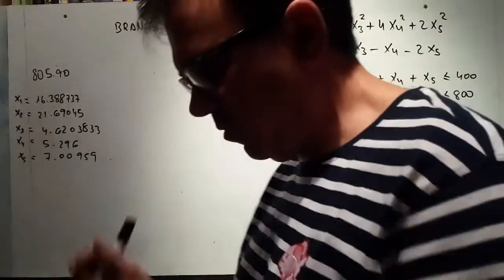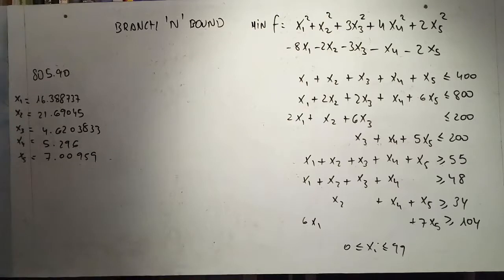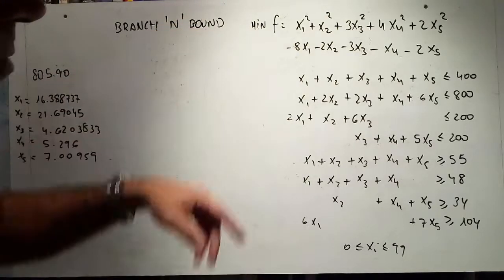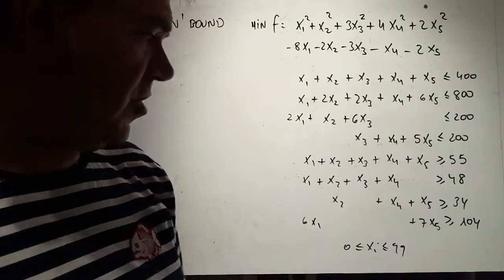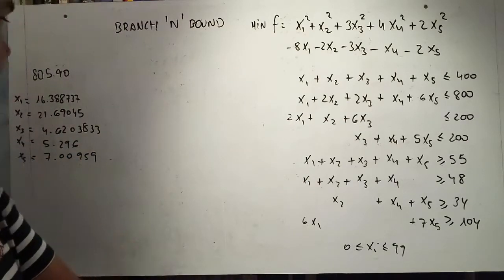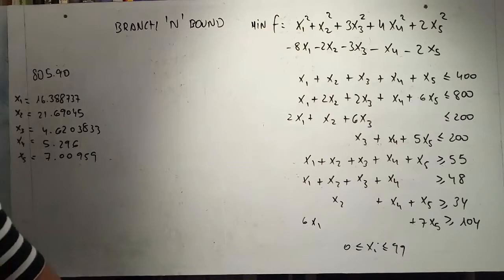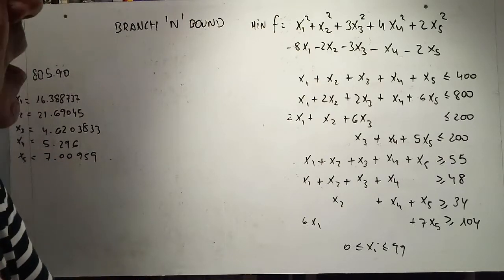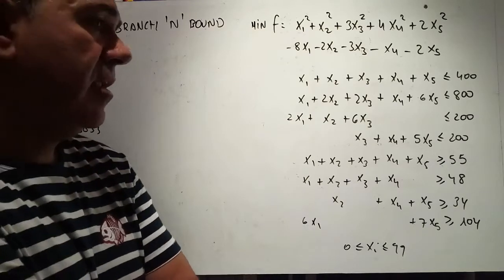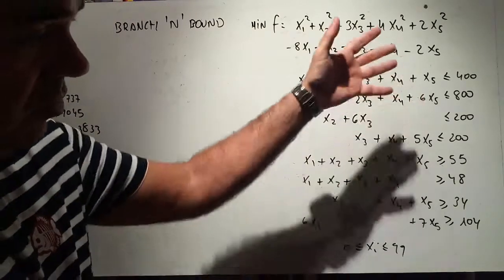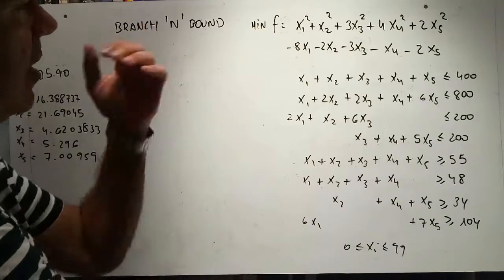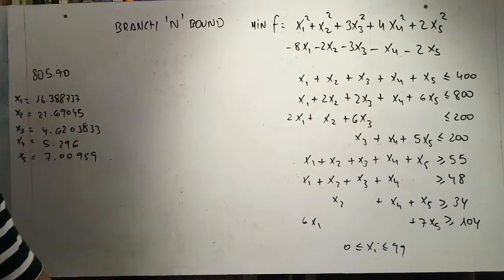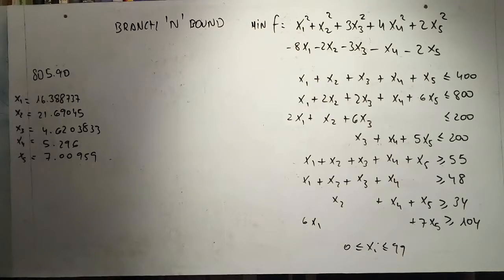We're going to solve a nonlinear convex quadratic program subject to a block of eight constraints, with all variables between zero and ninety-nine. We are interested not in the continuous solution but in the integral solution. These kinds of problems cannot be solved using derivatives as when a continuous solution is required, so we are going to use the branch and bound technique, which has been successfully used in large-scale linear programming problems.